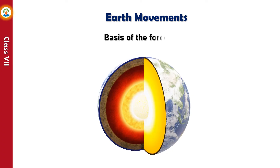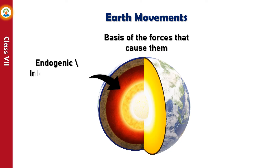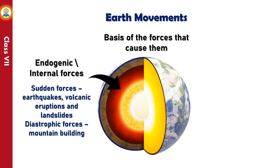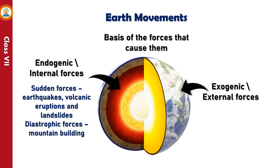The movements of the earth are divided on the basis of the forces that cause them. Endogenic or internal forces act inside the earth; they are of two types: sudden forces caused by earthquakes, volcanic eruptions, and landslides; and diastrophic forces involved in mountain building. Exogenic or external forces work on the surface of the earth, acting slowly and resulting in erosional and depositional activities.